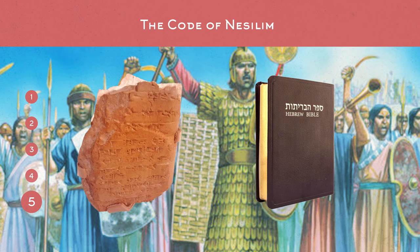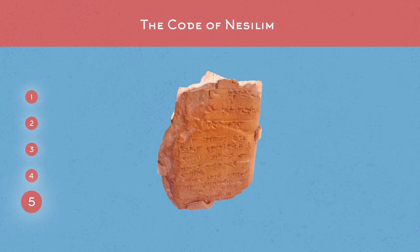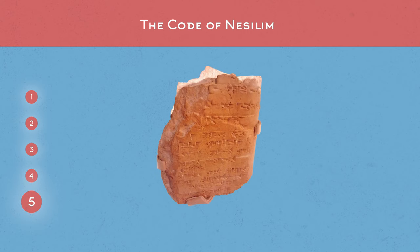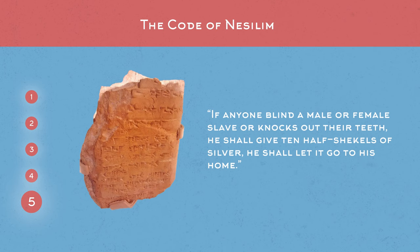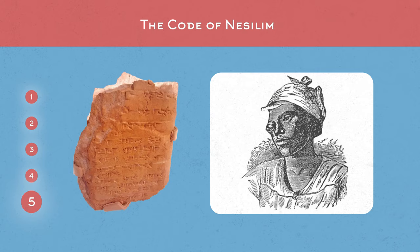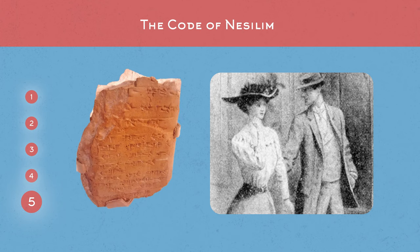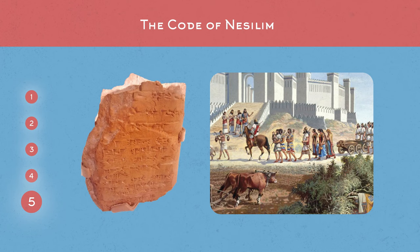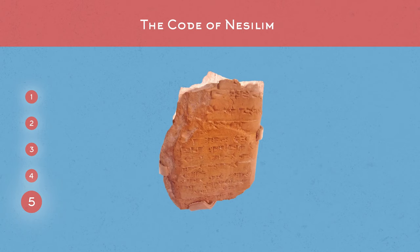Unlike earlier codes, the Code of Nesilim shows a slight shift in how people of the time perceived slaves. Although still considered lesser than free men and women, the code had provisions and punishments for if a slave was harmed by someone else. One law states: if anyone blinds a male or female slave or knocks out their teeth, he shall give ten half-shekels of silver and let it go to his home. This suggests that people were punished for cruel treatment of slaves, and if they crippled them, they were held responsible for looking after them thereafter. The code covers humane treatment of slaves, and there are laws showing they could choose who to marry, buy property, open businesses, and purchase their freedom. It even covers a divorce-type aspect to relationships. Compared to the earlier codes, the Code of Nesilim was almost kind, with far less severe punishments for those who broke the law.